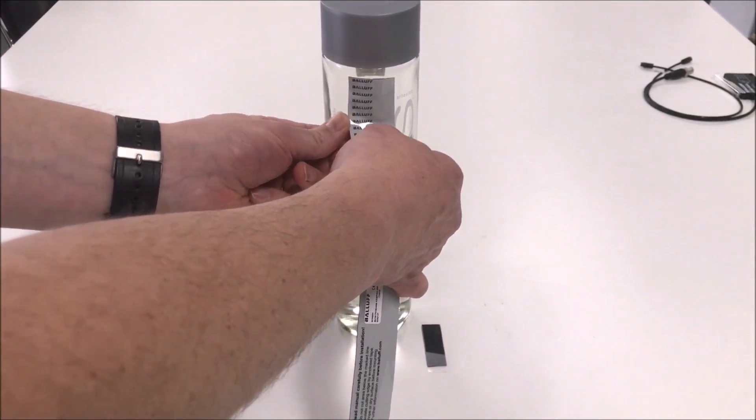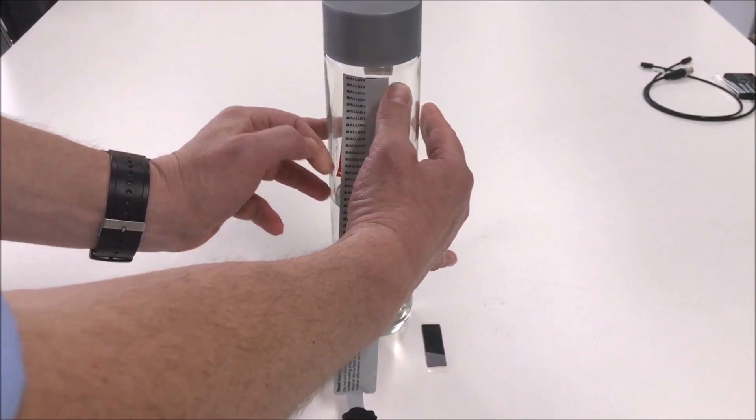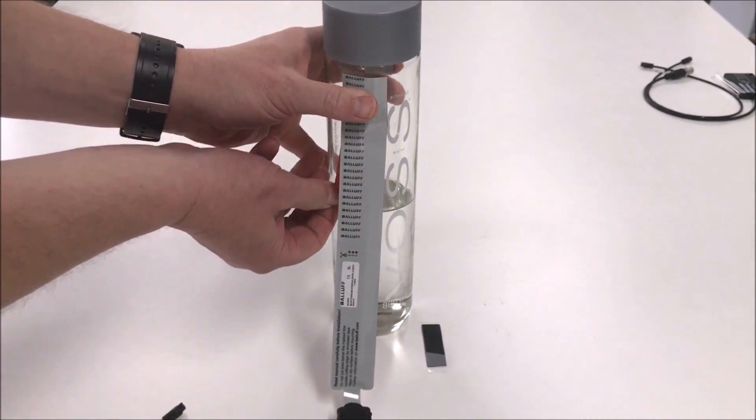We simply peel the adhesive backing from the tape, press the tape onto the container, taking care to remove any air bubbles as we go.